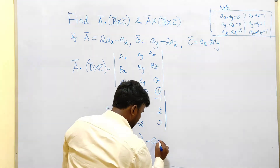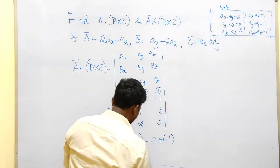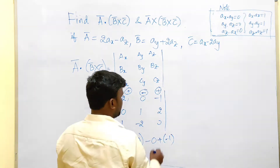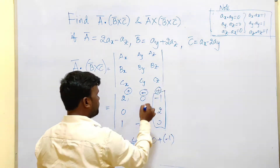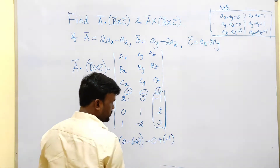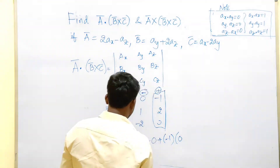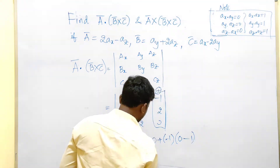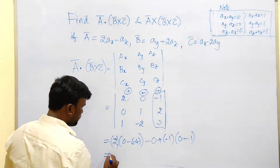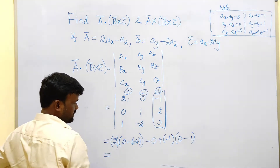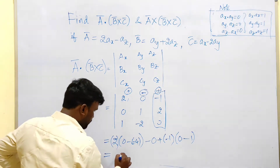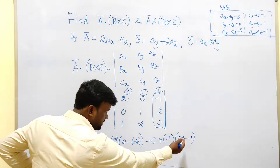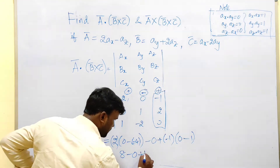For the third term, using the plus-minus-plus notation, it is plus (−1) times the remaining 2×2 minor. Removing that column and row, the minor is: (0·(−2) − 1·1) = 0 − 1 = −1. So the third term is (−1)·(−1) = +1.